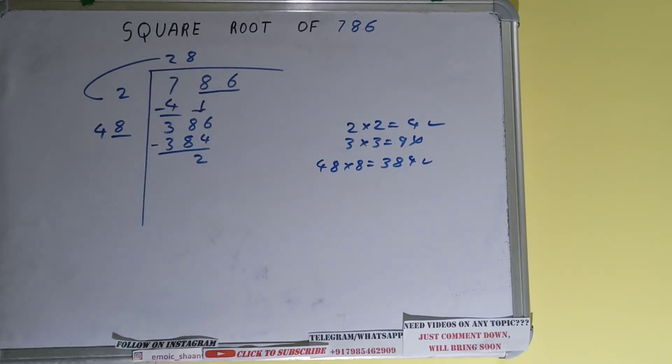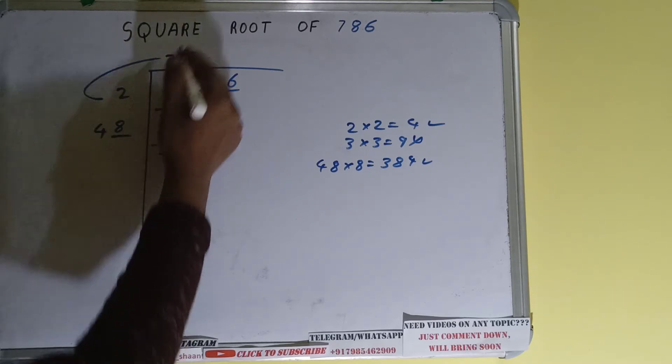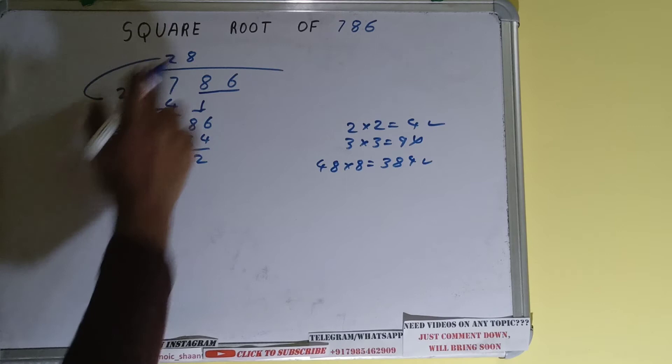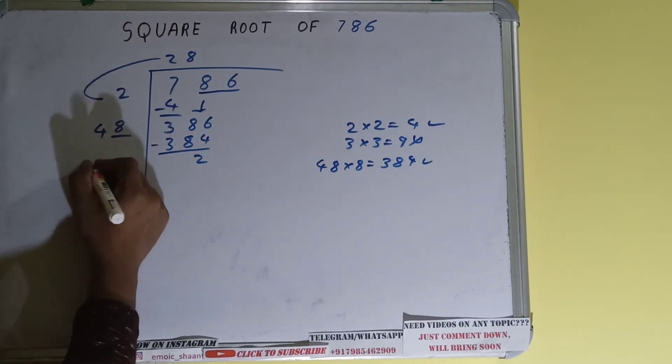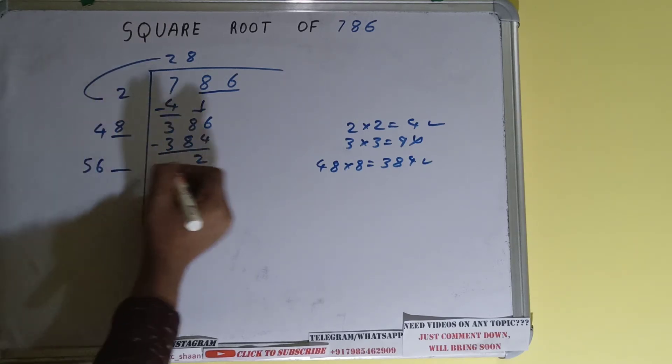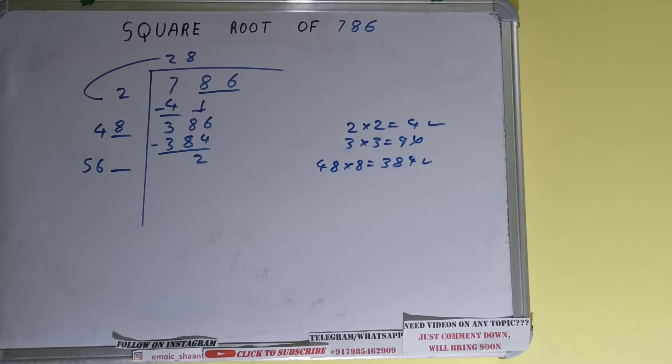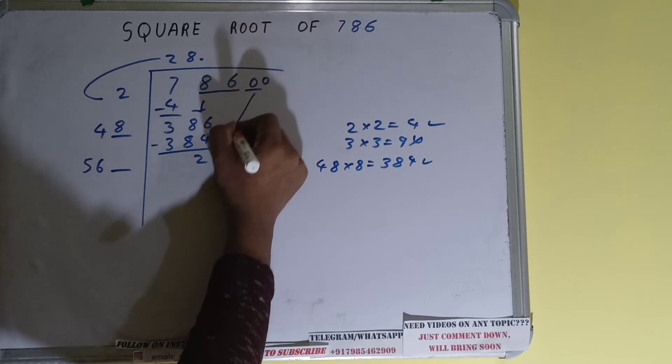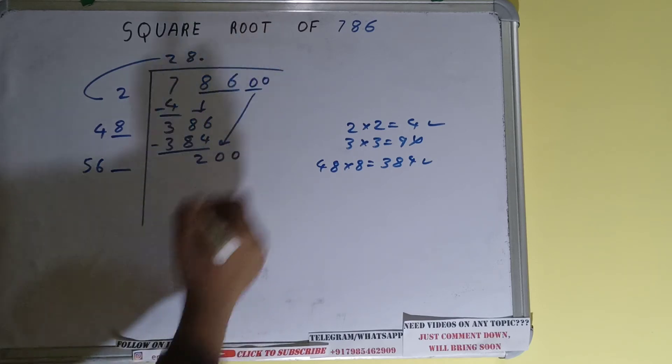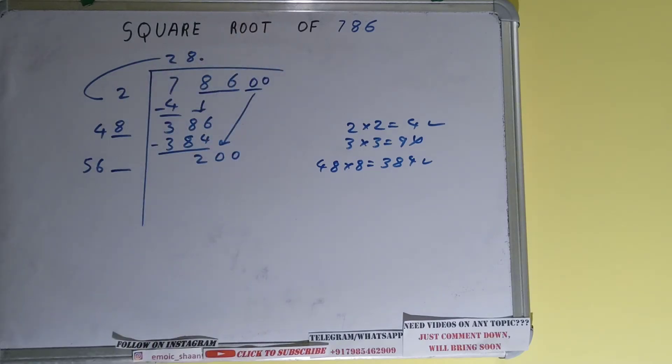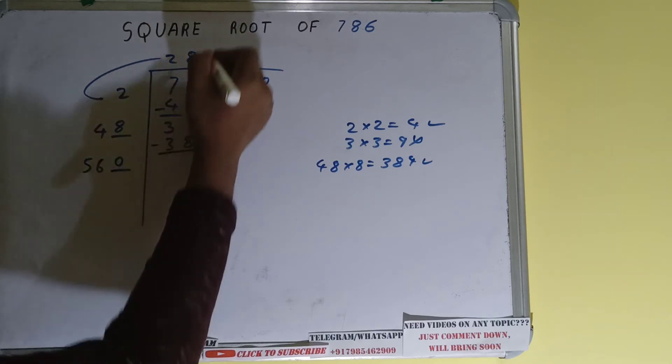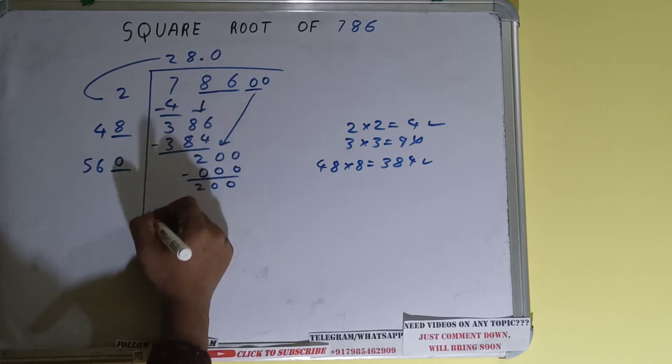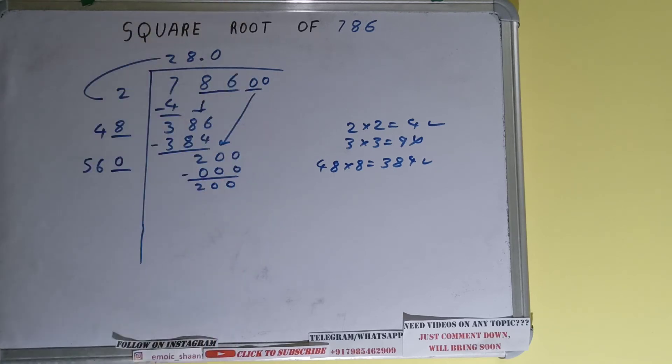Now 48 into 8 we did right, so add both. So 48 plus 8 will be 56 and keep 1 digit extra. And this number we need to make it big but we don't have more pair, so we'll put decimal. Once we put decimal we can bring down pair of zeros and number will become as 200. Now we can try 0, 0 here and 0 here, again 200 will be left.